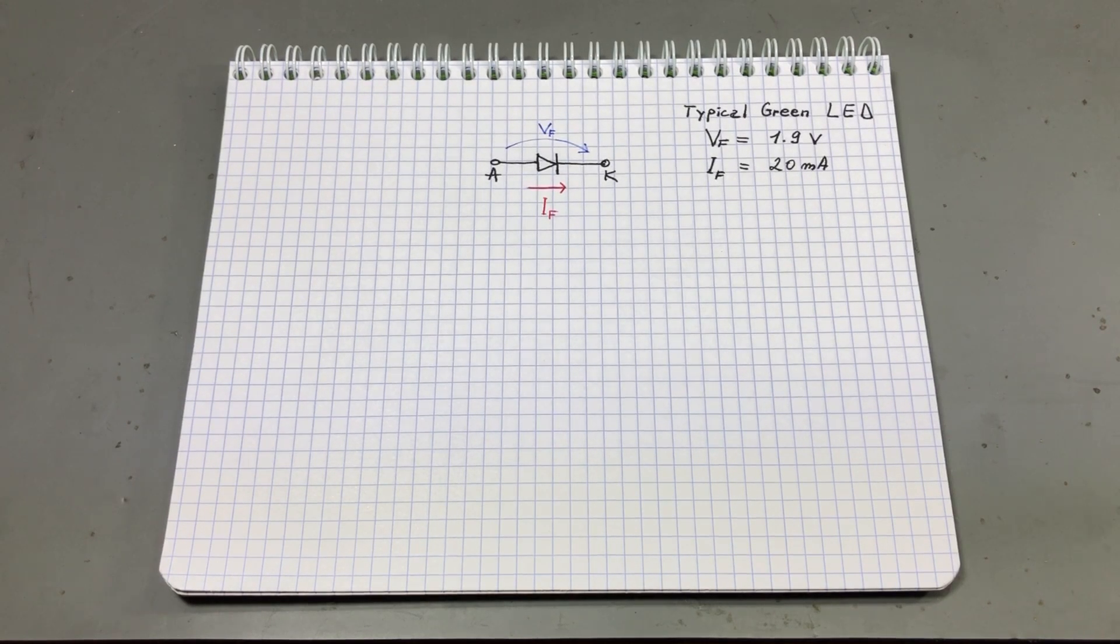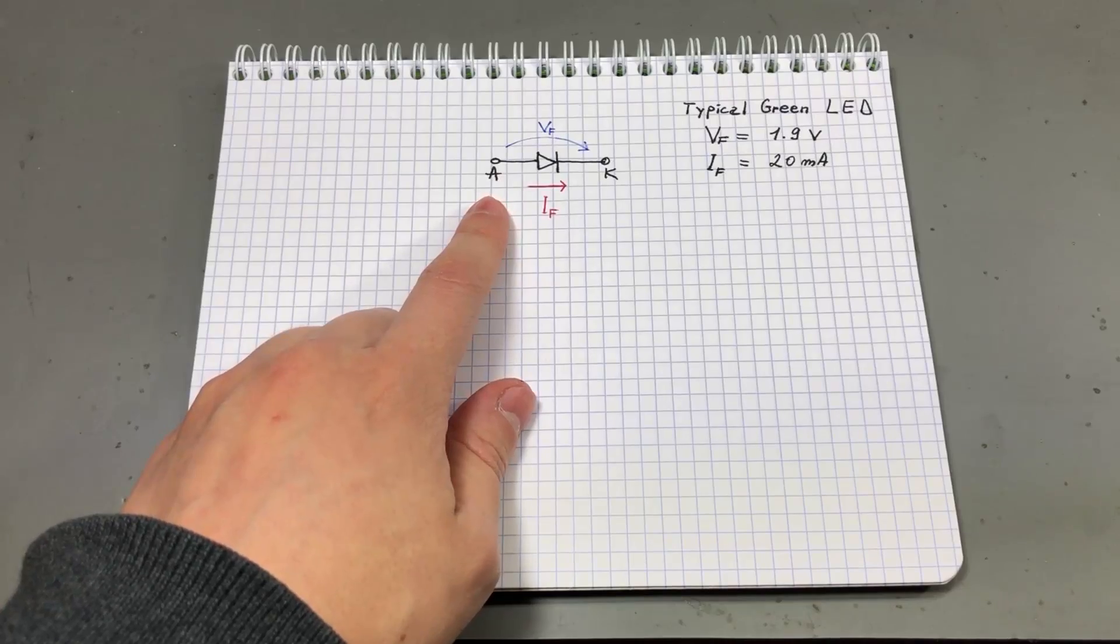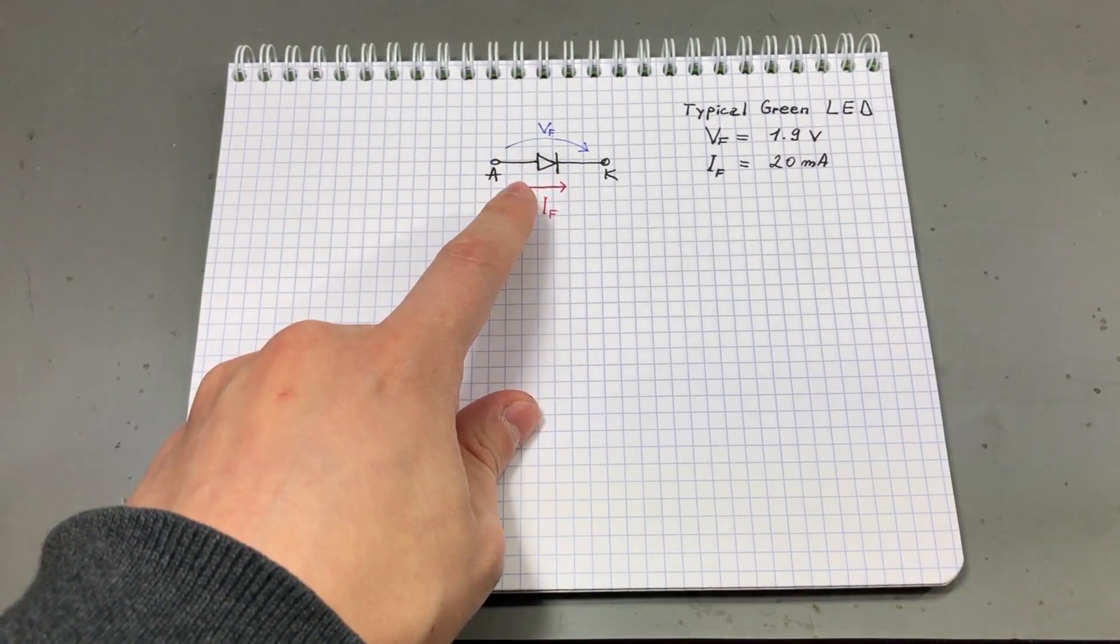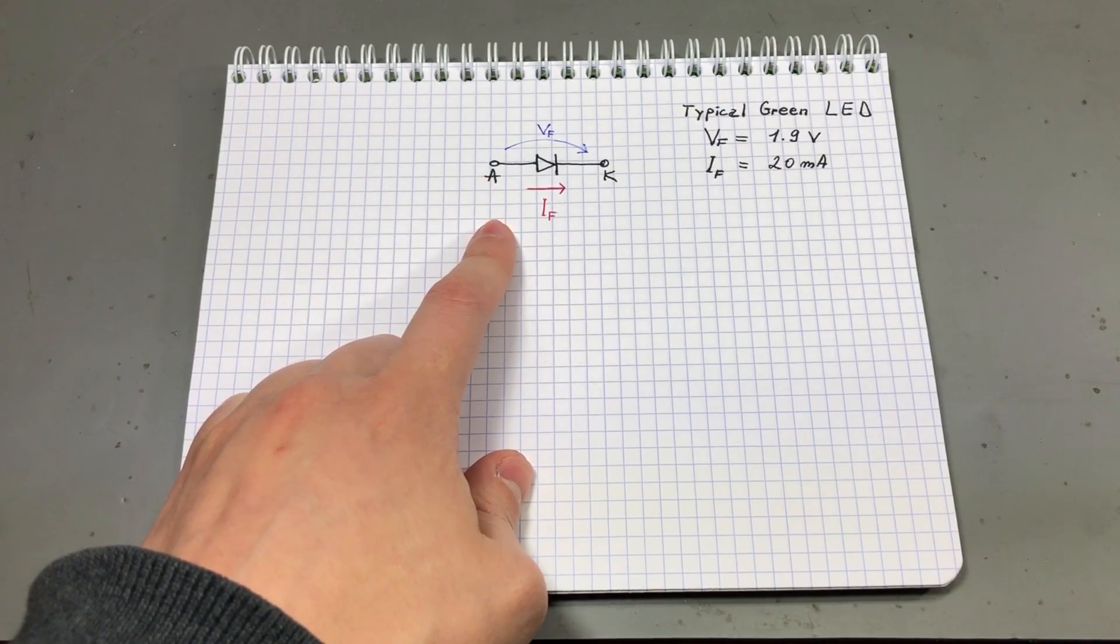So fast forward to current time. Let me give you some basic info on how to properly connect your LEDs. So let's start by taking a look at this LED symbol and we're going to talk about forward voltage and forward current. These are two basic parameters that you need to know for an LED.